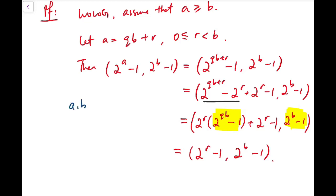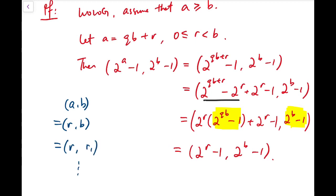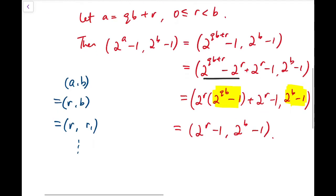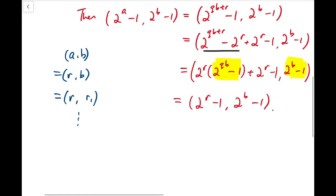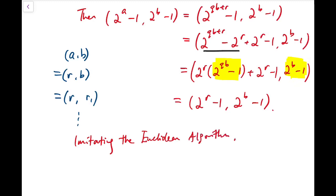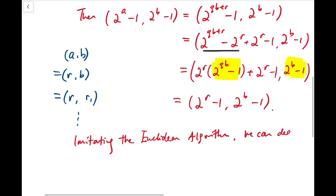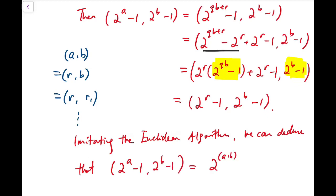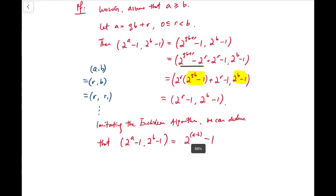By the Euclidean algorithm, we can reduce this to the GCD of 2 to the r minus 1 and 2 to the b minus 1. Working through the Euclidean algorithm — GCD of a and b equals GCD of r and b, then divide b by r, keep the remainder, and iterate — the process terminates since the numbers are positive and decreasing. By imitating this, we conclude the lemma holds, confirming that GCD(2^a − 1, 2^b − 1) = 2^(GCD(a,b)) − 1.